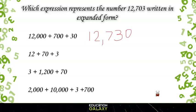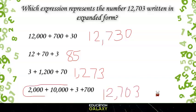Then we have 12 plus 70, which is 82, plus 3 is 85. The next answer choice looks tricky. Let's start with 1,200. Adding 70 would give us 1,270, and adding 3 would give us 1,273. The last answer choice gives us 2,000 plus 10,000, which is 12,000. Then 3 ones and 700. That gives us 12,703, which is our answer.